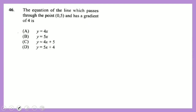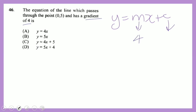Question 46: the equation of a line passing through point (0, 5) with a gradient of 4. The general form is y = mx + c. The gradient m = 4, and since the line passes through (0, 5), the y-intercept c = 5. The equation is y = 4x + 5.